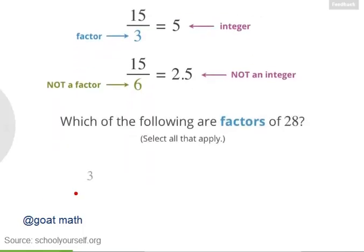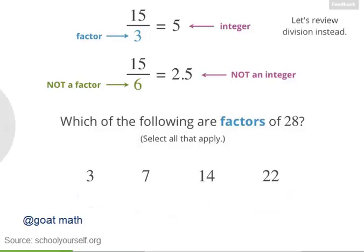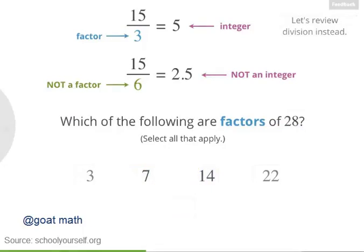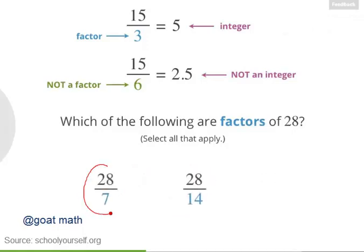Try another example. Which of these numbers down here are factors of 28? In other words, dividing 28 by which of these numbers gives you an integer? Nicely done. 7 and 14 are both factors of 28. If you divide 28 by 7, you get 4, which is an integer. And if you divide 28 by 14, you get 2, another integer.